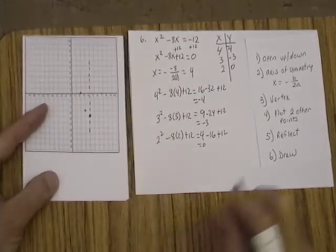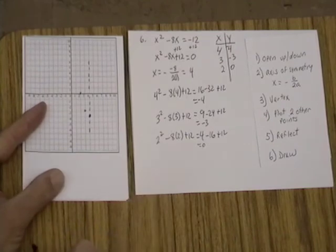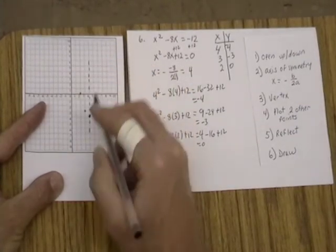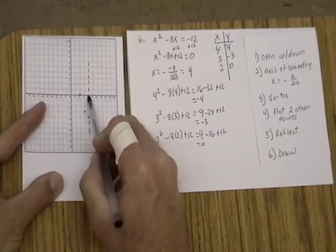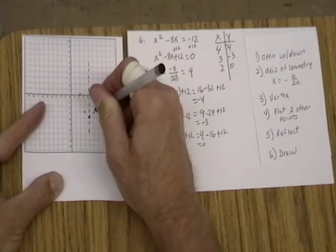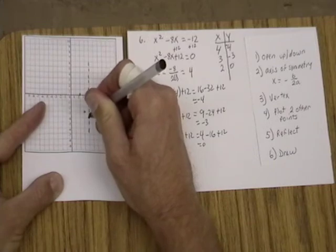And so when we reflect our points now, so this one takes 1 to get to the axis of symmetry, so we go 1 past it. And this one takes 2 to get to the axis of symmetry, so we go 2 past it. And so as we graph this then, and again make sure it's not a v but a u.